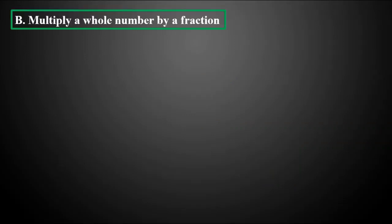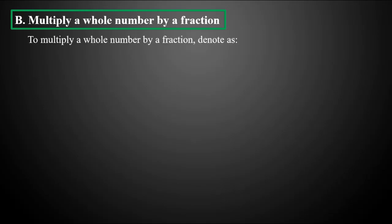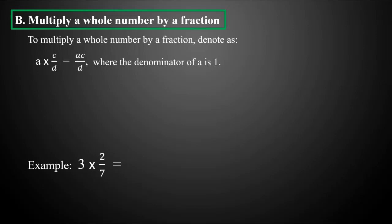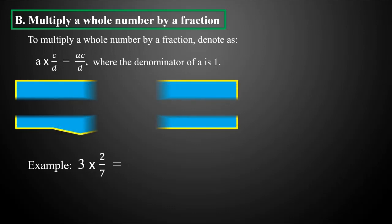Next is multiplying a whole number by a fraction. To multiply a whole number by a fraction, denoted as a times c over d equals ac over d, where a is the whole number with a denominator of one, c is the numerator, and d is the denominator. For example, our given is three times two-sevenths.